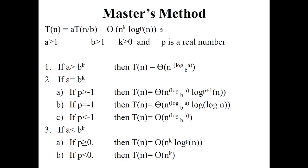We can solve this using the Master's method. There are three cases: a > b^k, a = b^k, and a < b^k. If a > b^k, then the time complexity is Θ(n^(log_b(a))). If a = b^k, there are three sub-cases based on p: if p > −1, T(n) = Θ(n^(log_b(a)) · log^(p+1)(n)); if p = −1, T(n) = Θ(n^(log_b(a)) · log(log n)); if p < −1, T(n) = Θ(n^(log_b(a))).